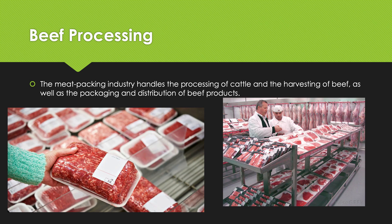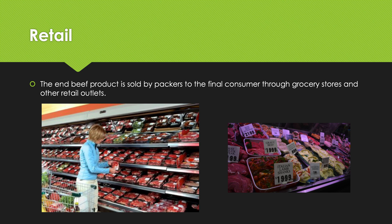Once your cattle meet market spec, the meat packing industry takes over the beef processing side of things. The meat packing industry handles the processing of cattle and the harvesting, packaging, and distribution of beef products. This is where pH tests occur, for example — Meat Standards Australia is involved at this step, ensuring that the meat going out is fit for human consumption, and they also grade it to indicate how high or low quality that meat may be.